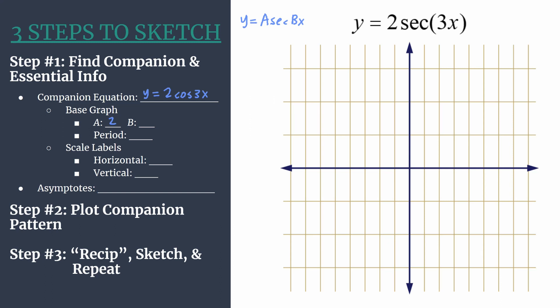Then b is the coefficient of x, so we see it's 3. That tells us we'll have 3 cycles of our graph between 0 and 2π. We calculate period using 2π divided by b, so our period will be 2π divided by 3.